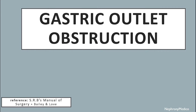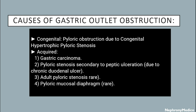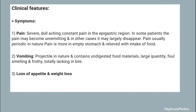Hello and welcome. Let's talk about gastric outlet obstruction. The causes may be congenital or acquired. Congenital is pyloric obstruction due to congenital hypertrophic pyloric stenosis. Acquired causes include gastric carcinoma, pyloric stenosis secondary to peptic ulceration due to chronic duodenal ulcer, adult pyloric stenosis, and pyloric mucosal diaphragm.